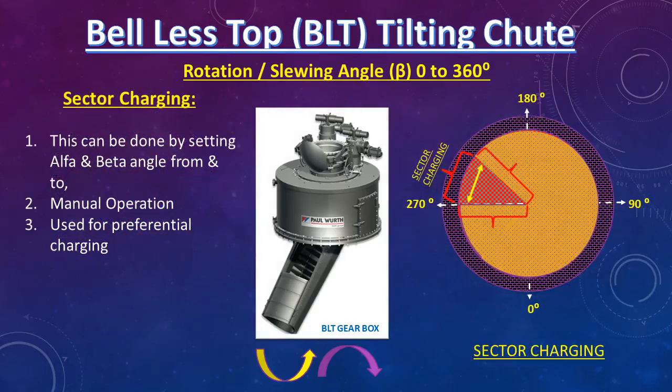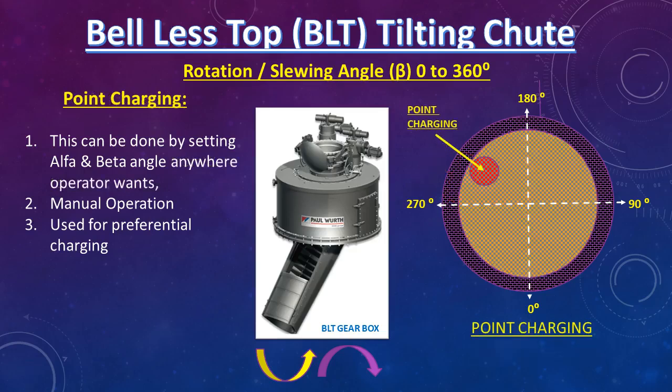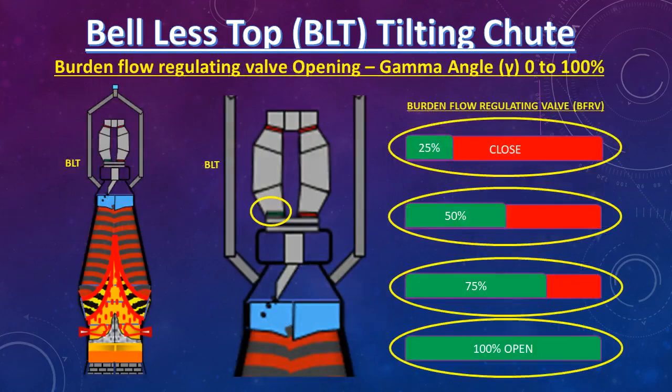What is sector charging? The tilting shoot oscillates between two points or limits as chosen by the operator. This is a manual operation done by setting the beta angle between two limits, and is used for preferential charging. What is point charging? This is done by setting both alpha and beta angles at any position the operator wants. It is also a manual operation used for preferential charging.